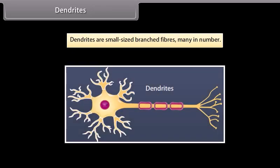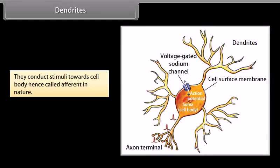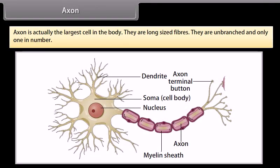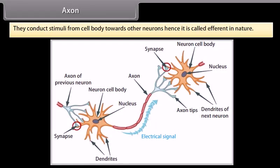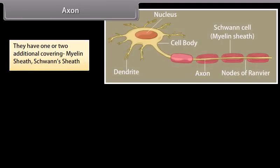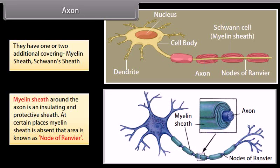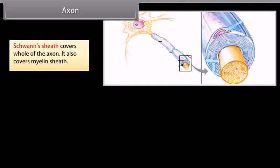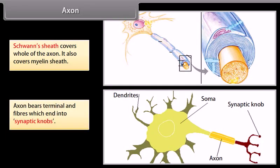Dendrites are small-sized branched fibers, many in number. They conduct stimuli towards the cell body, hence they are called afferent in nature. The axon is the longest fiber — long, unbranched, and only one in number. It conducts stimuli from the cell body towards other neurons, hence it is called efferent in nature. It has one or two additional coverings: the myelin sheath and Schwann sheath. The myelin sheath is an insulating and protective sheath; where it is absent, the area is known as the node of Ranvier. The Schwann sheath covers the whole axon including the myelin sheath. The axon bears terminal end fibers which end in synaptic knobs.